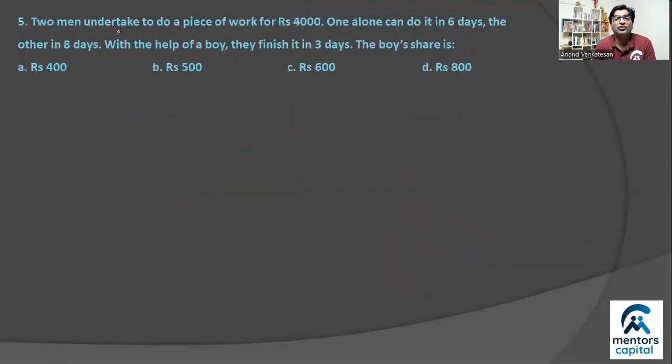Next question, question number 5. Two people take 4000 rupees to finish a task. One can do it in 6 days, the other can do it in 8 days. And using a boy they finish it in three days. So what is the share of the boy? So basically logic is that the share of money will be the share of work done. Whoever does more work will get more money.